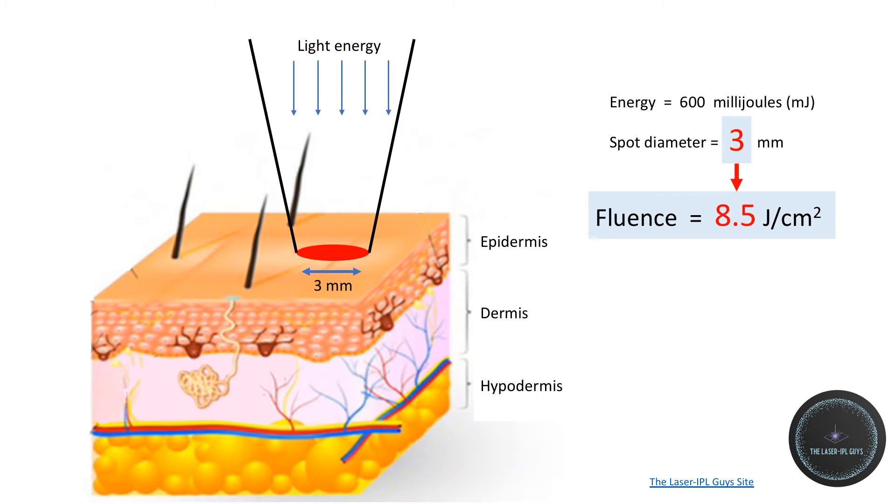If you then use a smaller spot, in this case 3 millimeters, with exactly the same energy as before, then the fluence will increase to 8.5 joules per square centimeter. And the same energy in a 2 millimeter spot diameter will yield 19.1 joules per square centimeter.